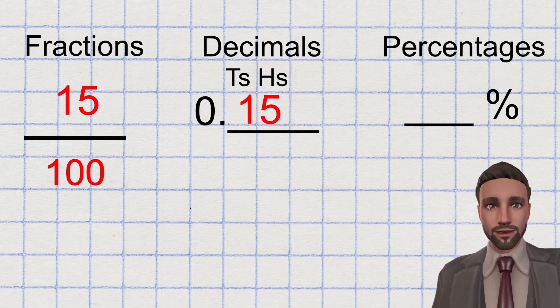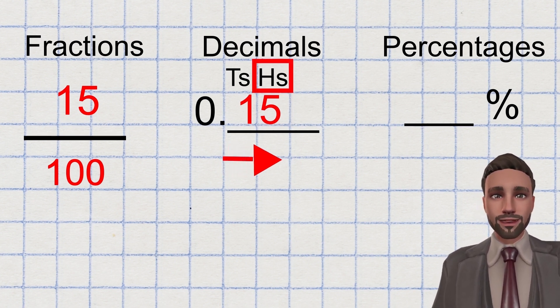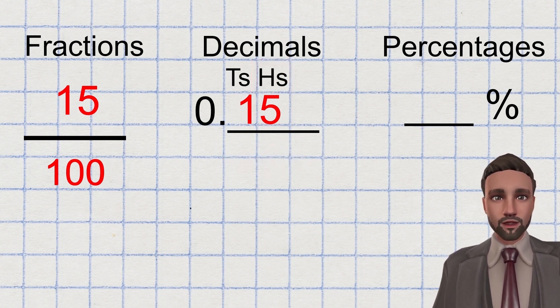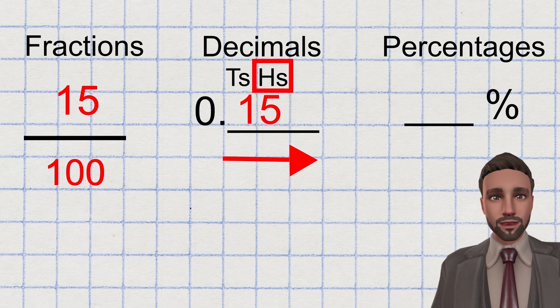We can check that this is correct by reading the entire number after the decimal and the name of the last column. So the entire number is 15. The name of the last column is hundredths. 15 hundredths, which sounds the exact same as 15 hundredths as a fraction.